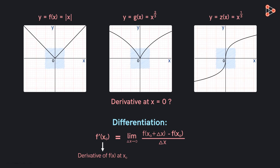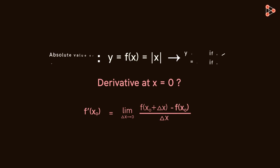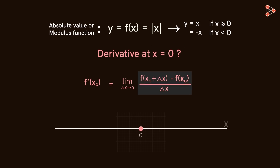In this video, we will understand such peculiar cases. We will see what it means when a derivative of a function does not exist at a particular value of X. In our previous video, we asked the derivative of this function at X equal to zero. Finding the derivative at X equal to zero means we have to observe how this ratio behaves for values of X near zero. So if we substitute X not equal to zero here,